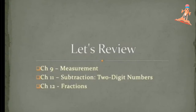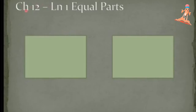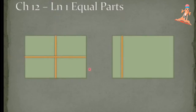Shall we go inside the revision of fractions? Chapter 12, Lesson 1: Equal Parts. Now can you see what shape this is? It's a rectangle. We are going to draw equal parts here. Now tell me, which of these two figures has equal parts?